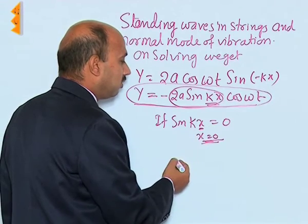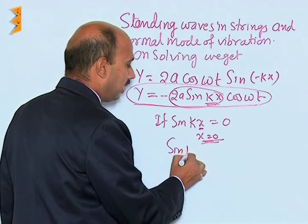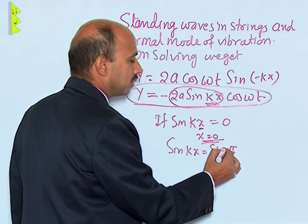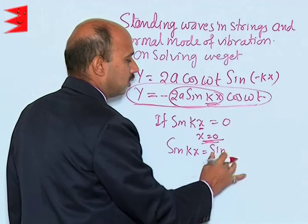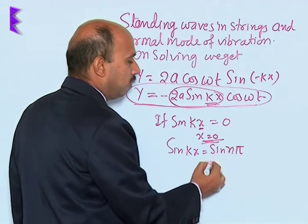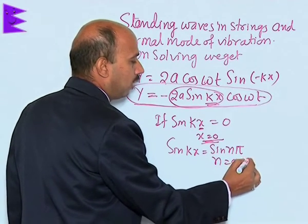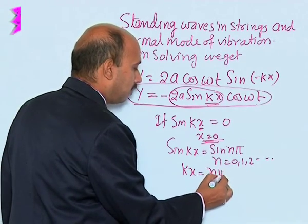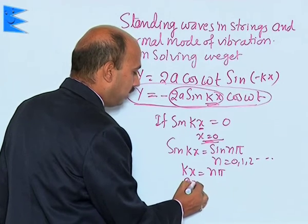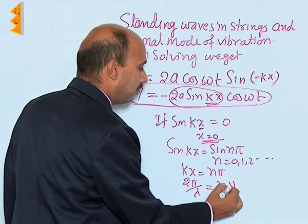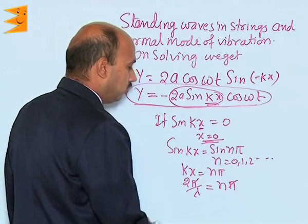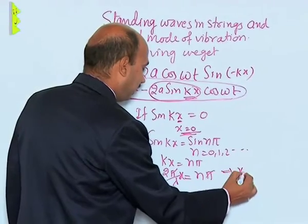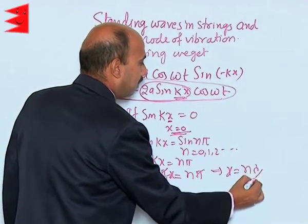If sin(kx) is equal to 0, it means we can write sin(kx) is equal to sin(nπ), where n is equal to 0, 1, 2, 3, and so on. So we can write kx is equal to nπ, and k is equal to 2π upon lambda, which equals nπ. Cancelling, we can write x is equal to nλ/2.